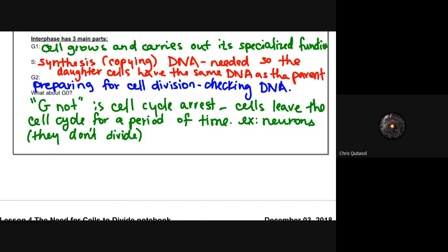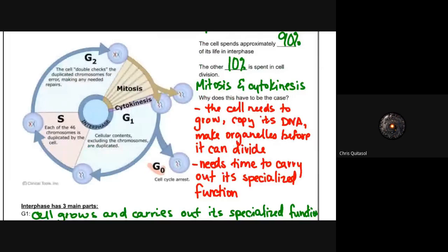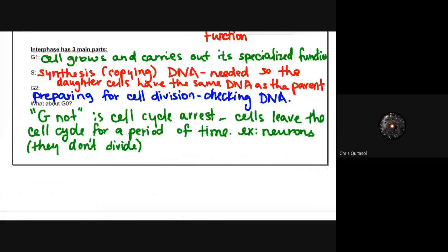What about G0? There's a G0 phase here. What does that mean? Well, this phase is for the cell cycle arrest. Cells leave that cycle for a period of time and then they never divide ever again. Neurons are a really good example of cells that never divide ever again once they go through that process of dividing and making up your brain.